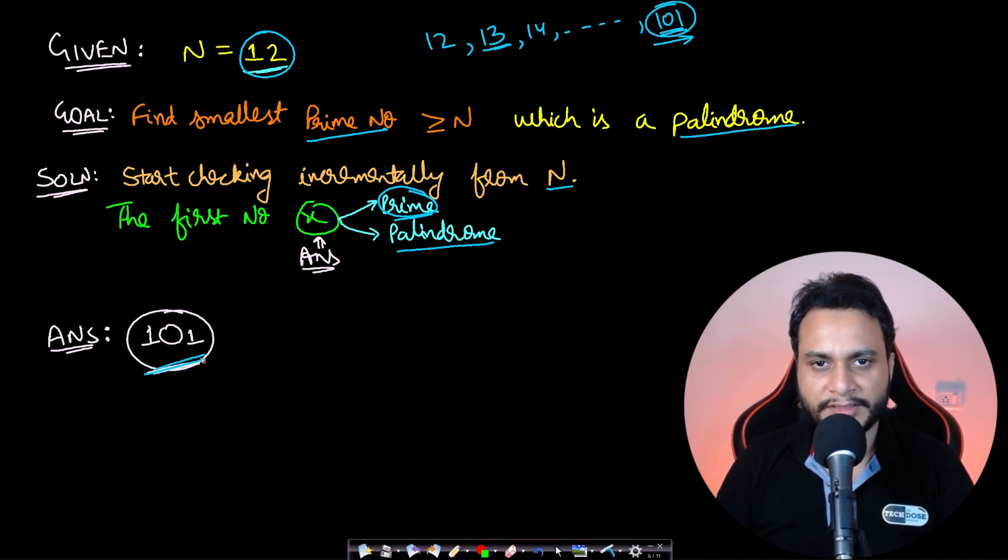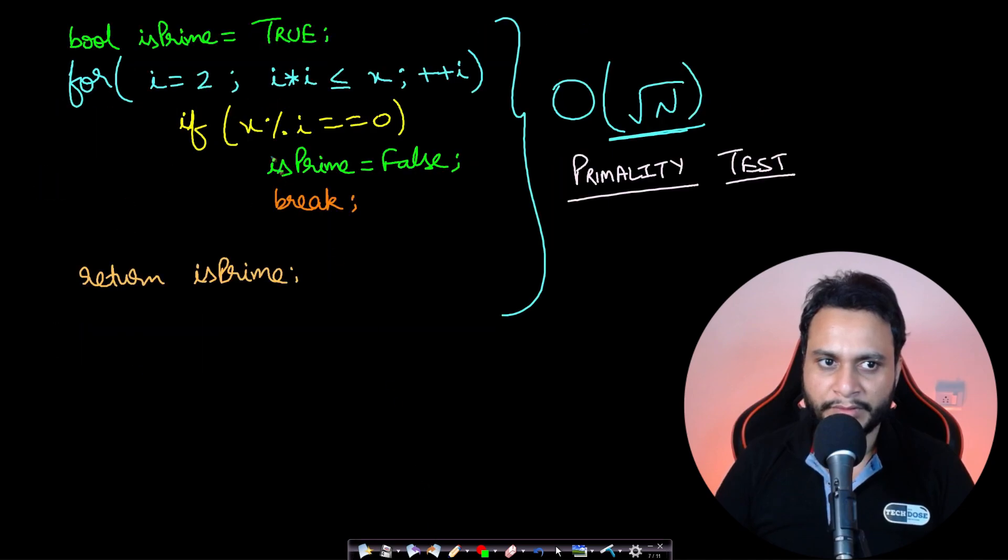The answer in this case is 101. Now to solve this problem, the first thing we should know is how to check if a given number is a prime number. If you want to check primality for a number x, then we have to run from 2 to square root of x.